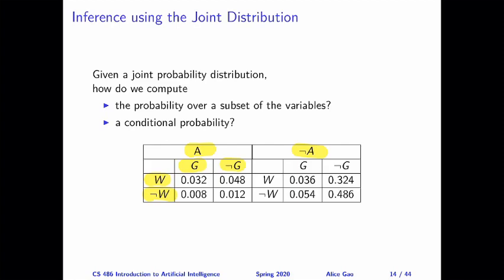So how do we interpret these numbers? For example, 0.054 here — this is the probability where the alarm is not going, Mrs. Gibbon is calling, and Dr. Watson is not calling. You can interpret each of these eight numbers in a similar way. One good check to do when you're looking at a probability distribution is that you should always check that all of the numbers sum up to one, which should be the case in this example.